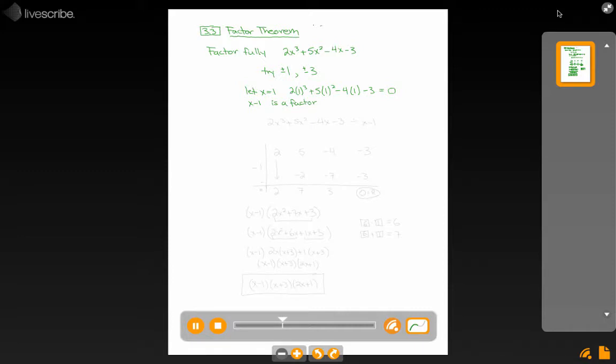So knowing that now, I can take my polynomial 2x cubed plus 5x squared minus 4x minus 3, and divide it by x minus 1, and try to find the other factors. I'll do that by synthetic division because I think it's the fastest now that we know all of our methods.